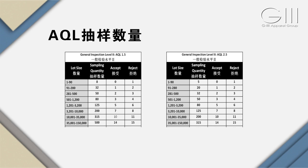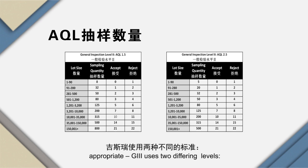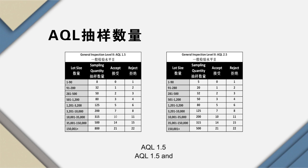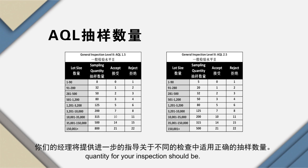检查水平方面，不同行业的不同公司可能使用不同水平的检验标准，但吉斯瑞一直使用检查水平二级。AQL抽样数量使用一般检验水平二级，由不同瑕疵的接受水平决定。吉斯瑞使用两种不同的标准：AQL 1.5和AQL 2.5，你们的经理将提供进一步指导，说明在不同的检查中适用正确的抽样数量。